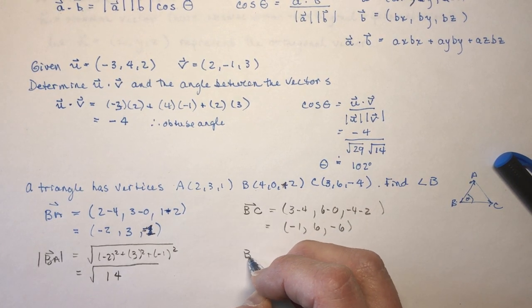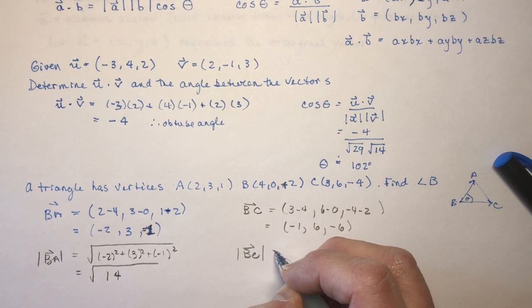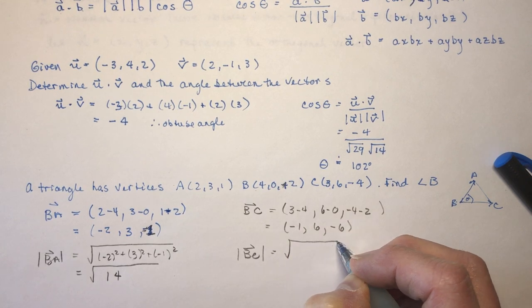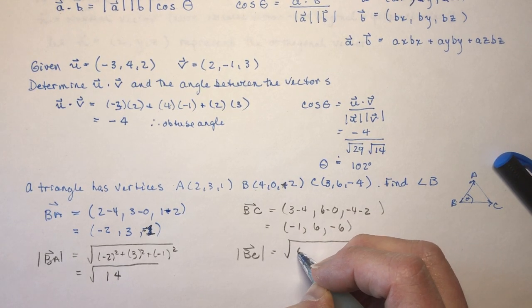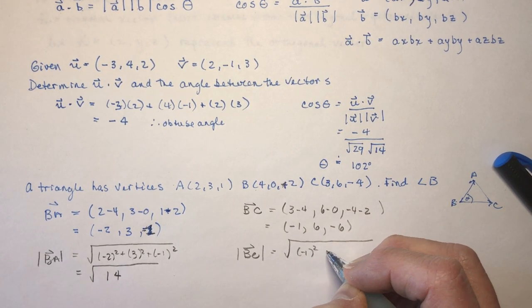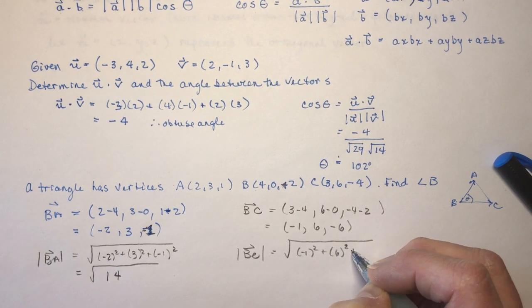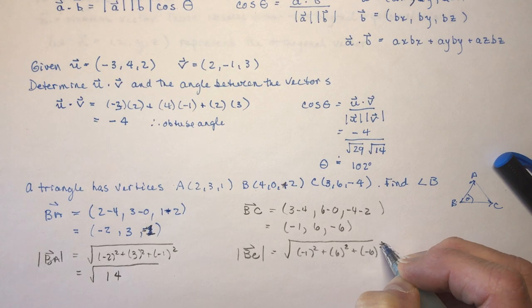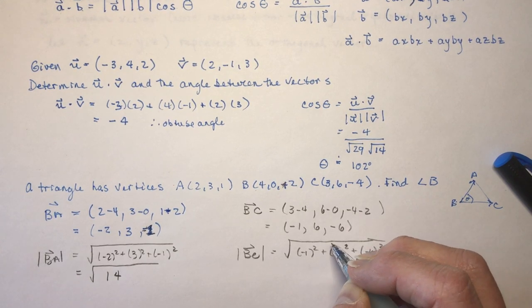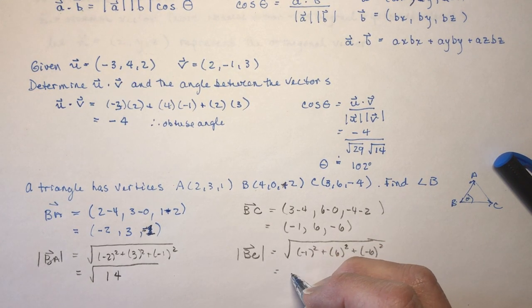And the magnitude of BC, you should be really good at doing these now, right? Practice makes perfect. So I have minus 1 squared, plus 6 squared, plus minus 6 squared. So that's 36, 72, and 1 is 73.